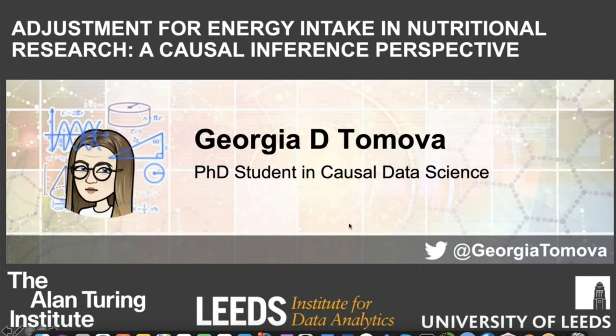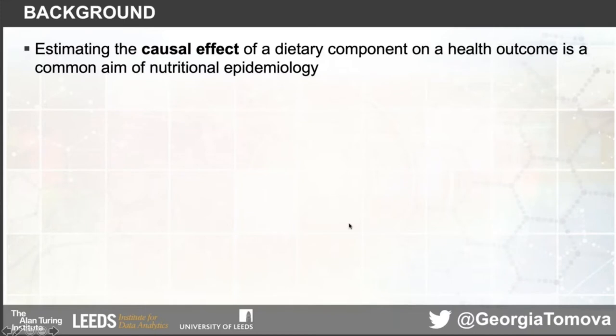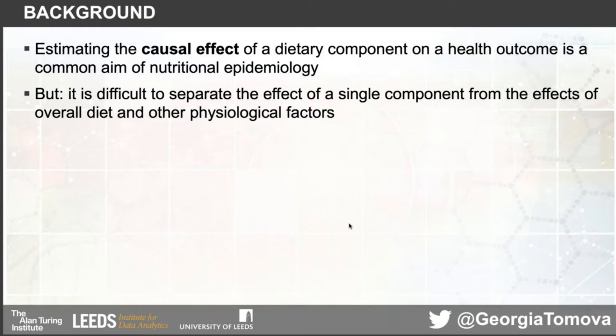First, why is this important? Estimating the causal effect of a dietary component — which can be a nutrient or a food group — on a health outcome is a common aim of nutritional epidemiology. However, it is really difficult to separate the effect of a single component from the effects of the overall diet and other physiological factors.